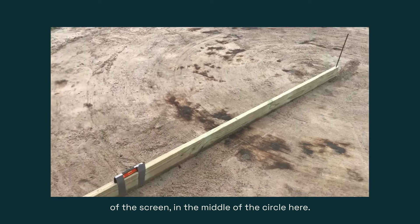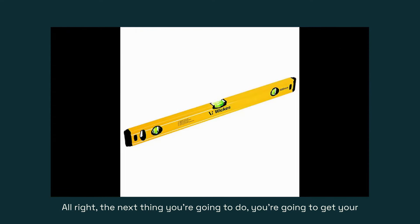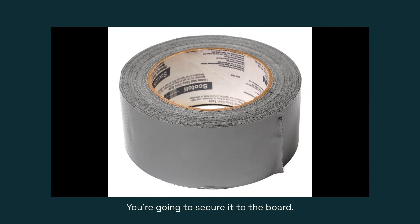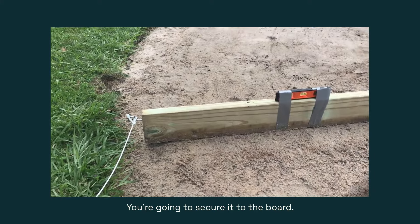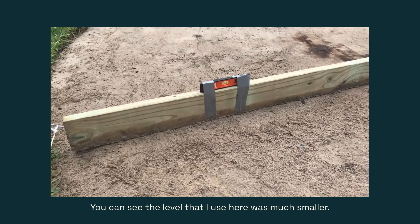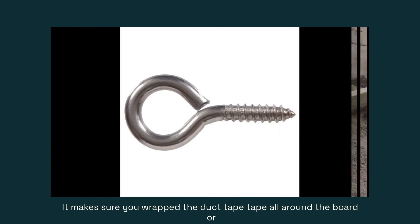The next thing you're going to do - you're going to get your level, and again it doesn't have to be a big one, and you're going to get some duct tape. You're going to secure it to the board just like I did here. You can see the level that I used here was much smaller. Make sure you wrap the duct tape all around the board or it'll come off.